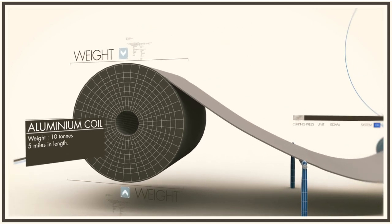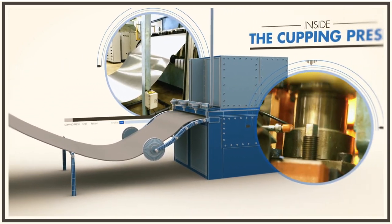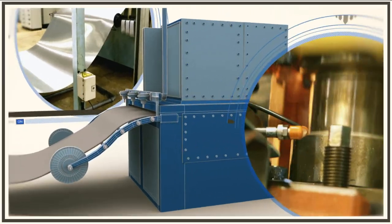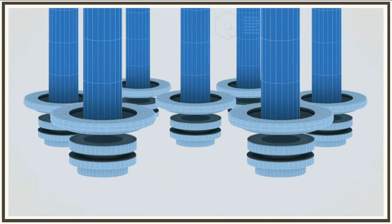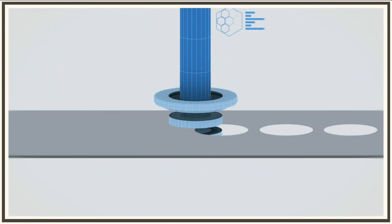The roll is fed continuously into a cupping press, which punches out thousands of shallow cups every minute. The material left over is collected and recycled.